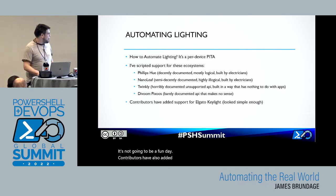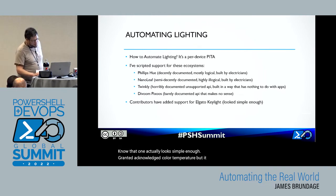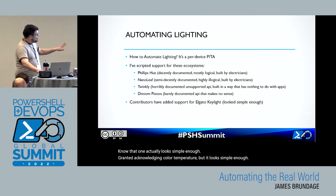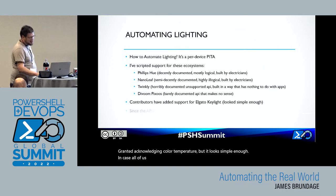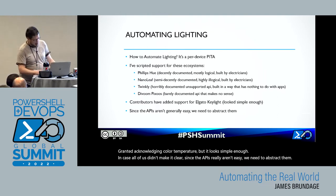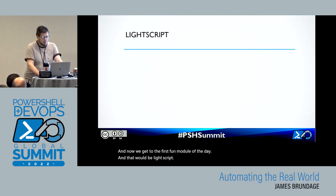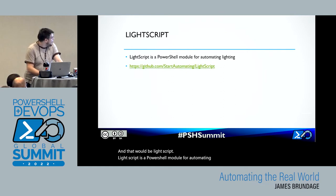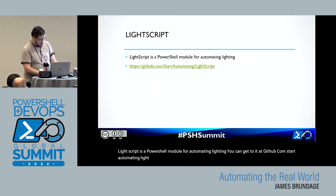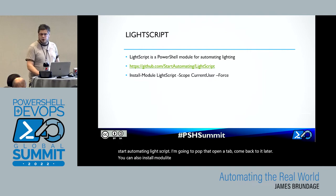Contributors have also added support for Elgato Keylight. It can only change color temperature, but it looks simple enough. Since the APIs really aren't easy, we need to abstract them. And now we get to the first fun module of the day: LightScript. LightScript is a PowerShell module for automating lighting. You can get to it at github.com/start-automating/LightScript. You can also Install-Module LightScript with scope CurrentUser and force. It's on the gallery now — I actually put up new bits last night.